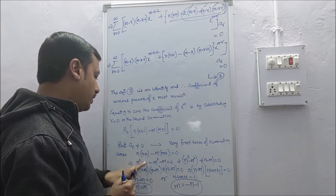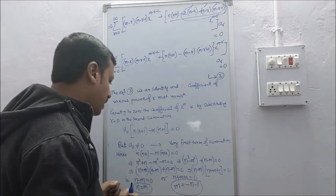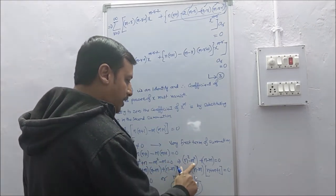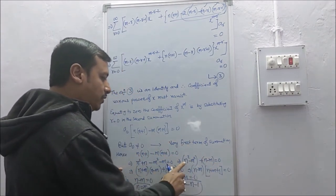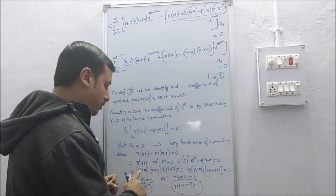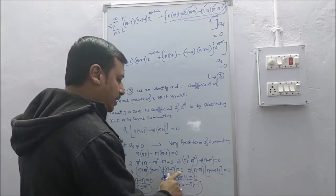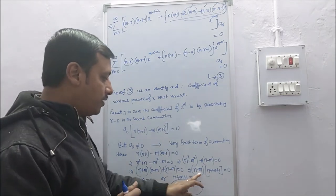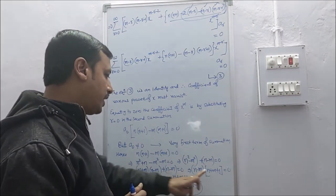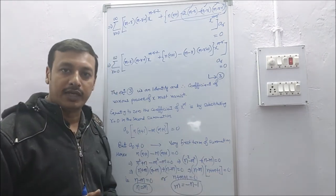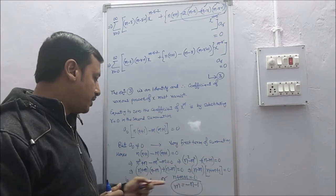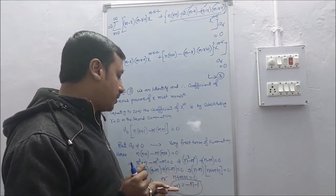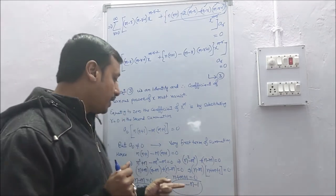Using the identity a² − b² = (a+b)(a−b), we get (n+m)(n−m) + (n−m) = 0, so (n−m)(n+m+1) = 0. Equating each factor to zero: either n − m = 0 giving m = n, or n + m + 1 = 0 giving m = −(n+1). These are our two values of m.